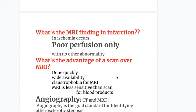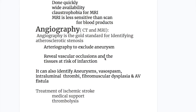In ischemia, MRI shows poor perfusion with no other abnormalities. CT scan has the advantage of being done quickly and having wide availability; patients may also experience claustrophobia with MRI, and MRI is less sensitive than CT for blood products. Angiography is the gold standard for identifying atherosclerotic stenosis; it excludes aneurysms, reveals vascular occlusions, and identifies tissues at risk of infarction. It can also identify vasospasm, intraluminal thrombi, fibromuscular dysplasia, and AV fistula.